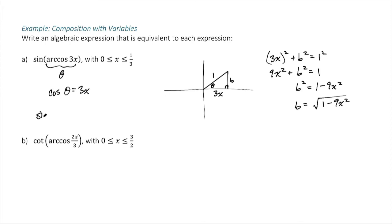I'm trying to find the sine of this angle theta, and sine is, of course, opposite over hypotenuse, so it's that b value, so square root of 1 minus 9x squared.